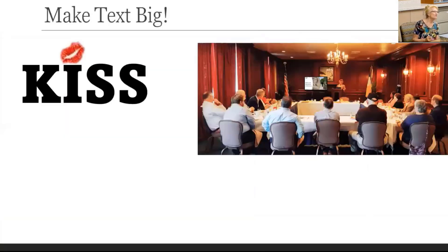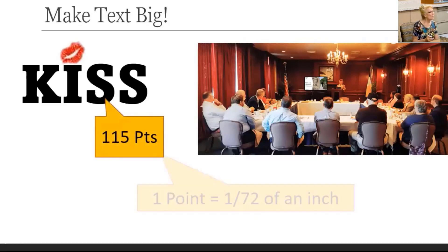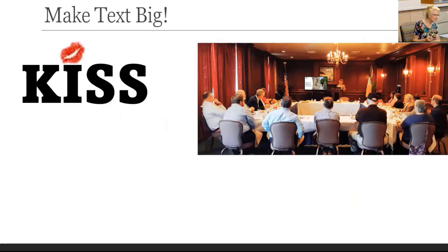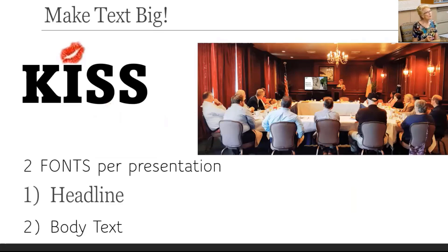You also want to make the text big. KISS is huge — in fact, it's 115 points, and one point equals 1/72nd of an inch. Remember consistency with creating a book? The same goes here. A rule of thumb is no more than two fonts per presentation: one for the headline and one for the body text, plus maybe one more for specialty purposes like KISS.